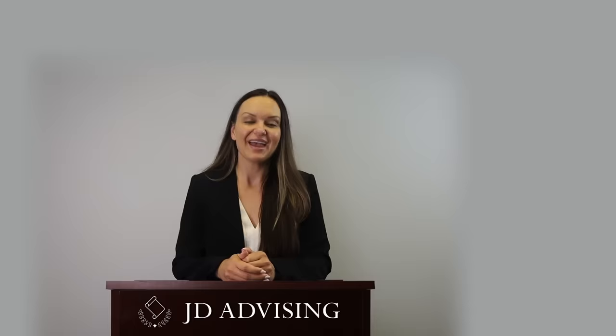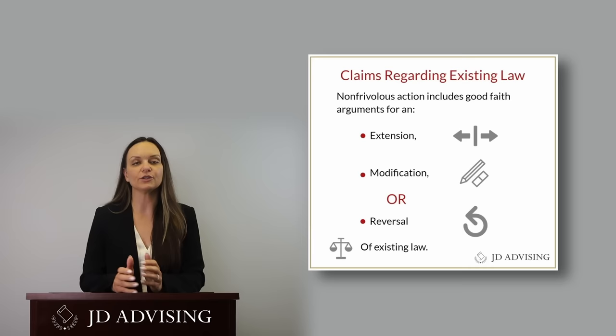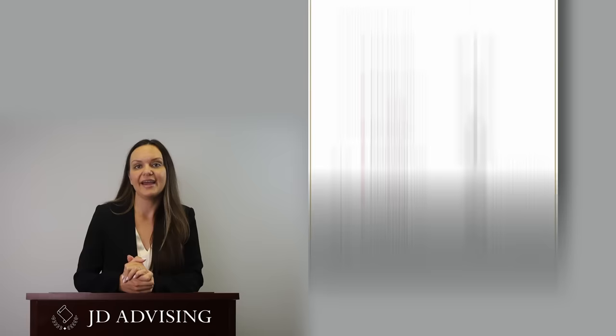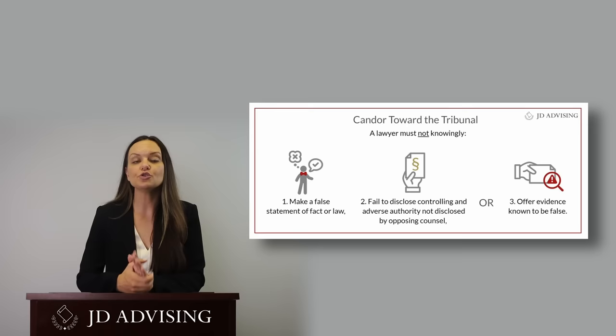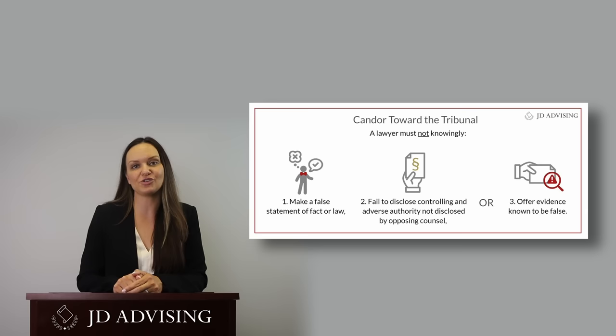Turning to the sixth subsection, litigation and other forms of advocacy, which makes up 10 to 16% of your total MPRE exam. A lawyer may only bring a claim if there is some basis in law and fact and the claim is not frivolous. The next rule is candor to the tribunal: lawyers shall not knowingly make false statements of fact or of law to the tribunal, or fail to correct statements of material fact or law previously made. For example, if the court asks a lawyer whether his client has a criminal record and the lawyer knows the answer is yes but says no, the lawyer has breached this obligation.